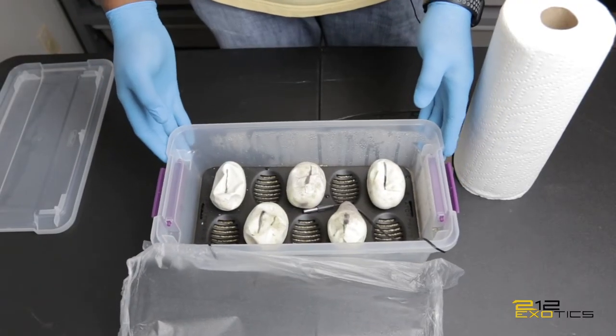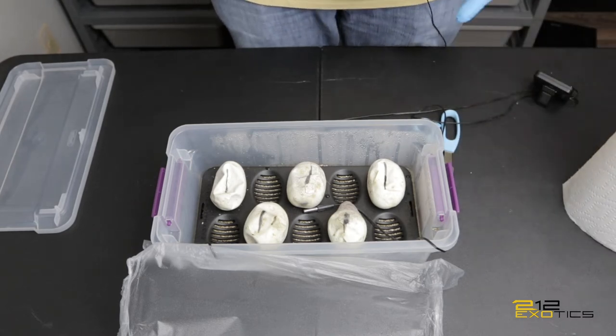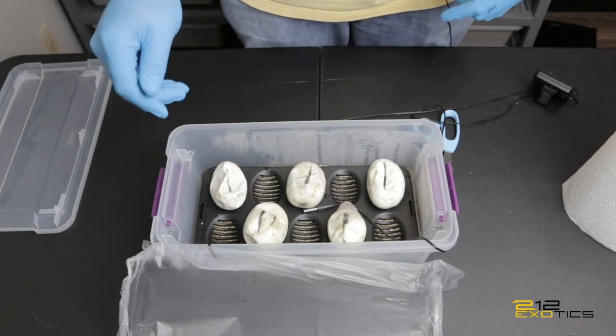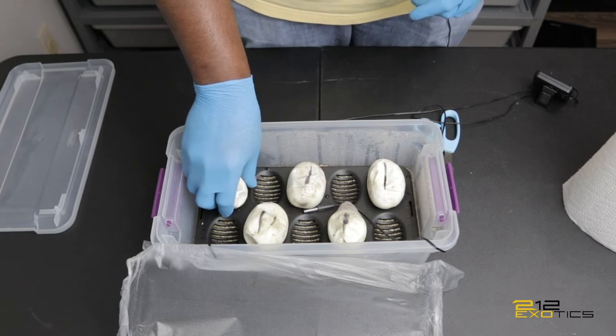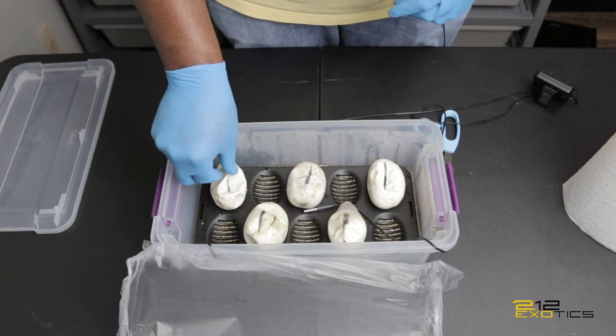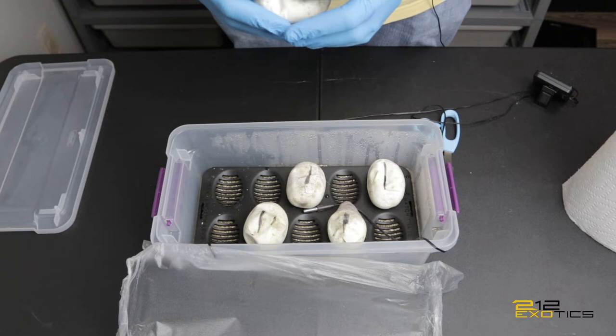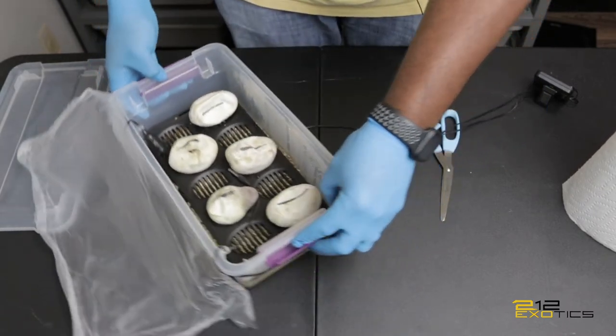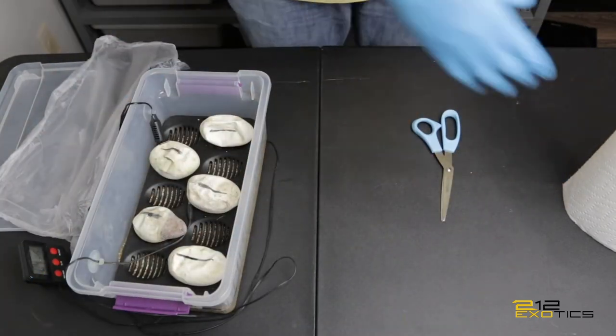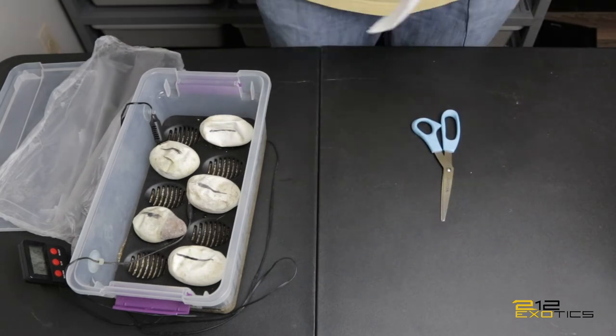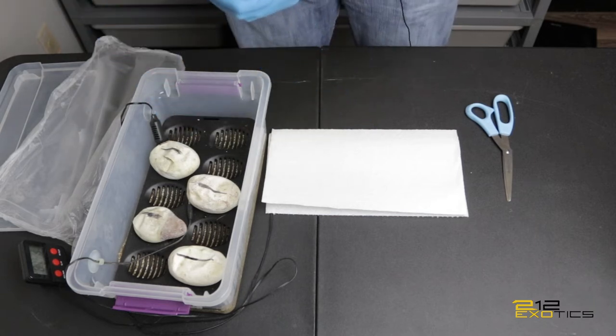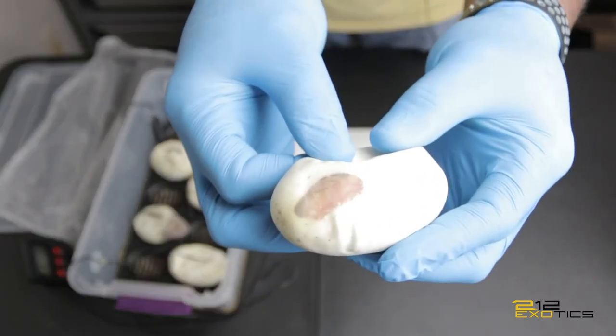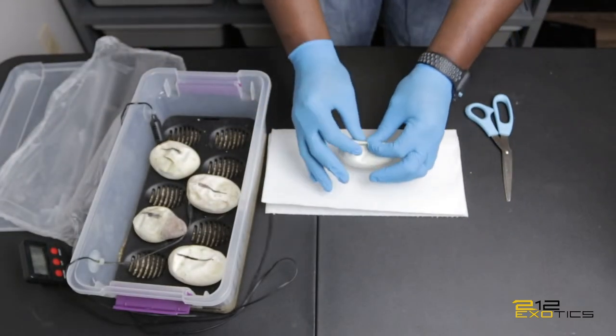All right guys, I am so excited about this. This is cutting clutch number one. As you can see, four of the eggs have already pipped. This one hasn't, so I'm actually gonna cut this one first just to see what's going on in there. This is egg number one. I got a window on this one so I can already tell it's a light colored animal.